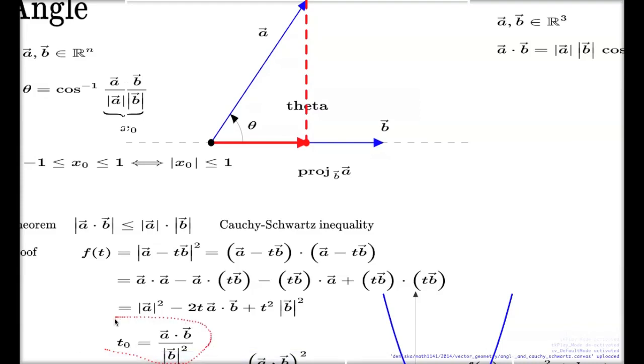You don't have to repeat this proof every time you need to find the projection. It's better to remember that formula. And here it is. So we have to scale B with a T0. And that's the result of that scaling. So this object is called the projection of A onto B.